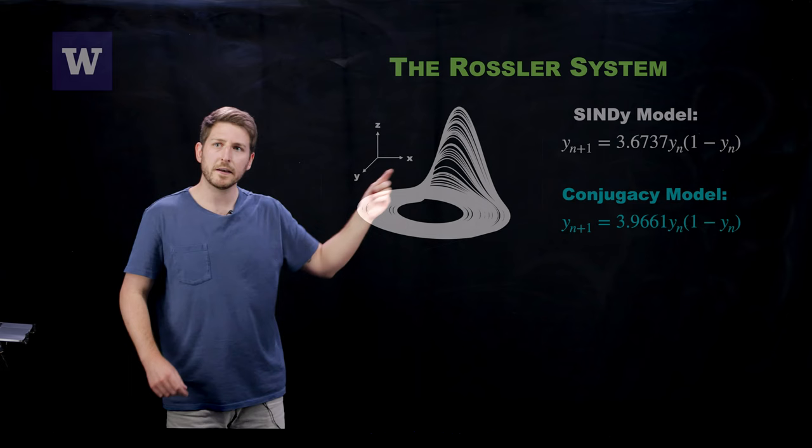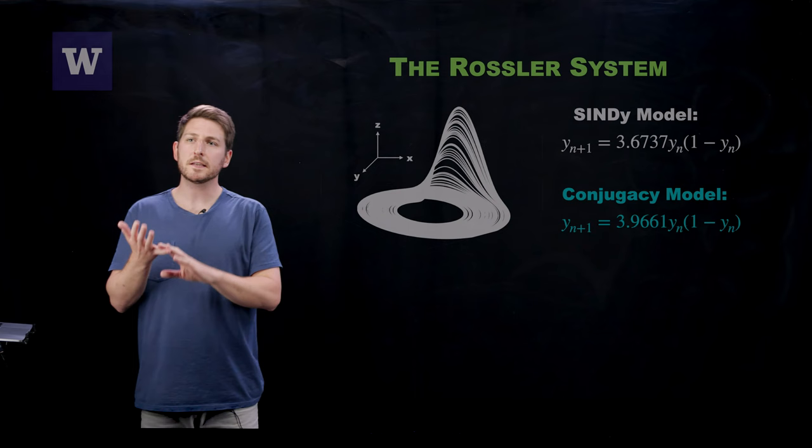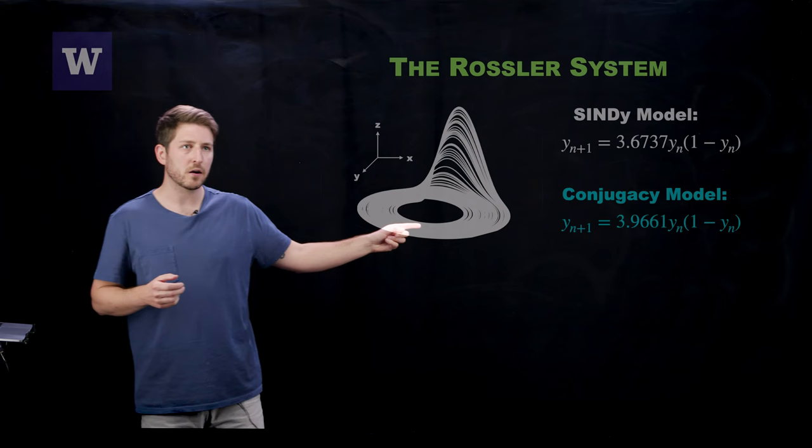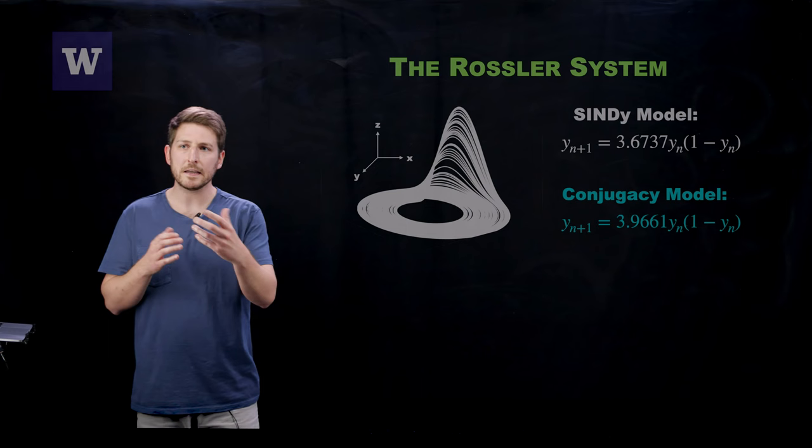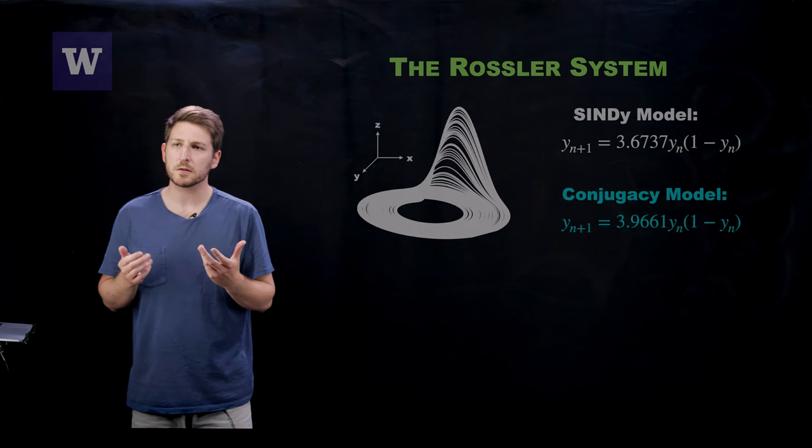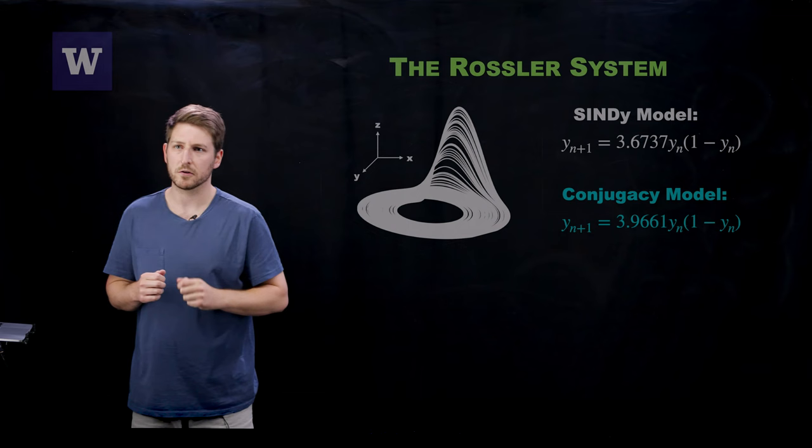Now, what I've done is I've conjugated the variables so that it's easy to compare between the SINDy model and the conjugacy model. And what you can see from the conjugacy model is that this is the result of applying our neural network to discover the latent space mapping g. They are both in the same form. The only thing that differs between the two of them is the leading coefficient in their logistic type functions.